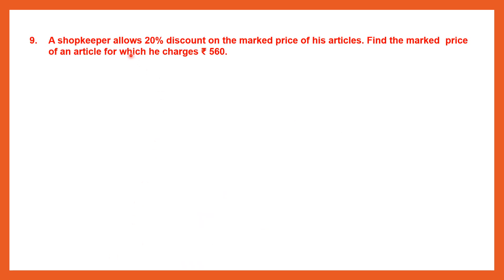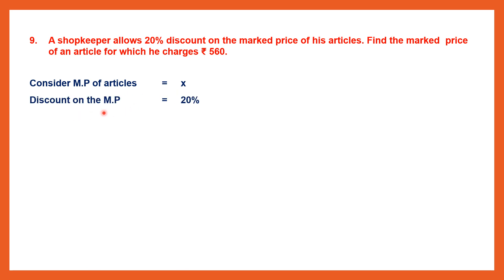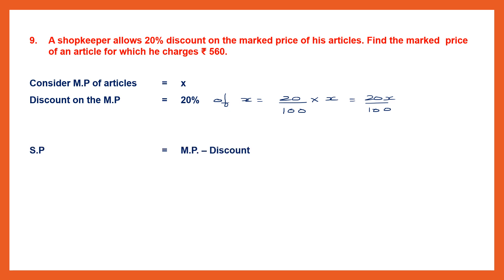Question 9. A shopkeeper allows 20% discount on the marked price of his articles. Find the marked price of an article which he charges Rs. 560. We have the discount percent and the selling price; we are asked to find the marked price. Consider the marked price to be X, so the discount on the marked price is 20% of X, which is 20X by 100.